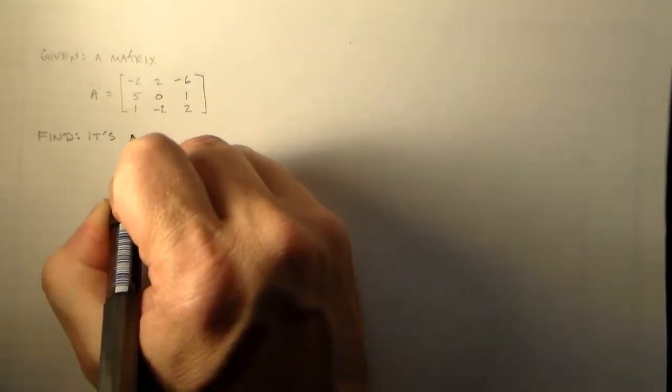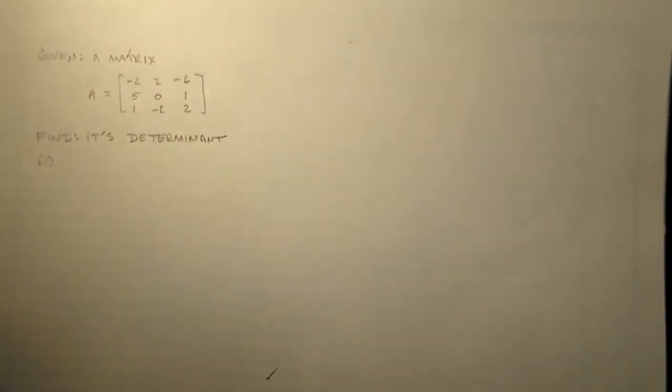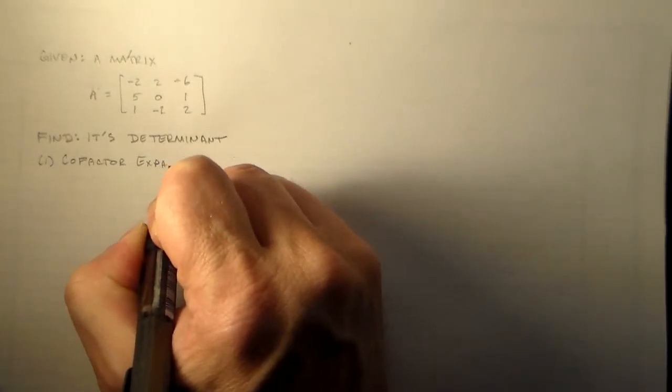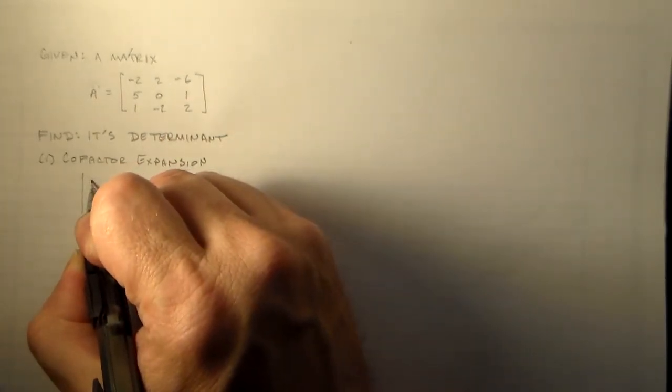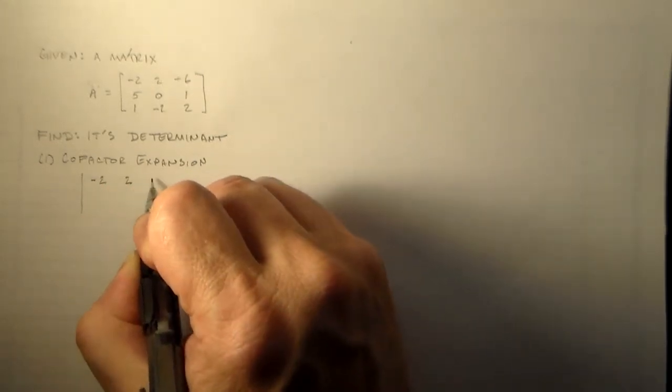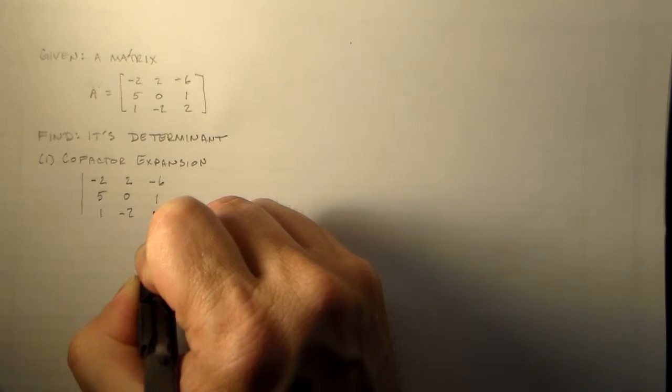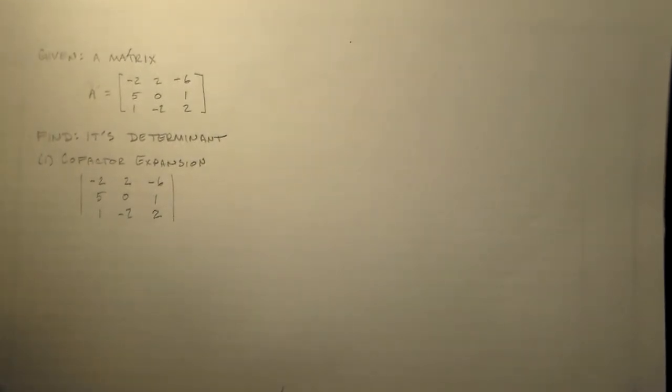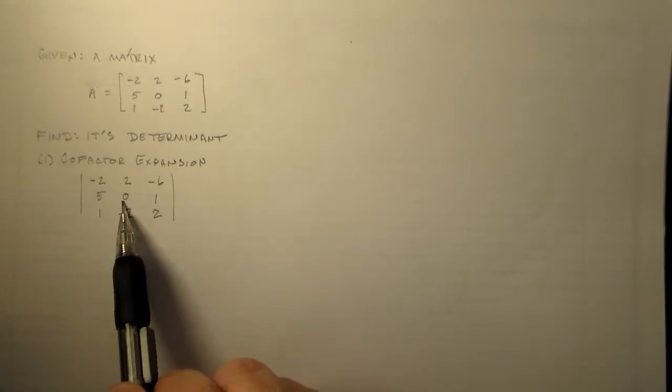Okay, it's determinant. And method one, the way you're normally shown what the determinant means is using this cofactor expansion. So let's just do the cofactor expansion. In that case, what we do is we take the matrix minus two, two, minus six, five, zero, one, one, minus two, two. And then we choose one row and we go down that row or maybe the column. We can choose a row. We can choose a column. We're perfectly free to do either.